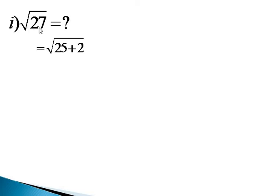That is 27. You cannot find the square root of 27 easily. So you have to write down 27 like this - that is square root of 25 plus 2.